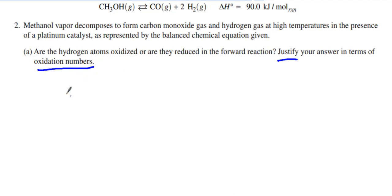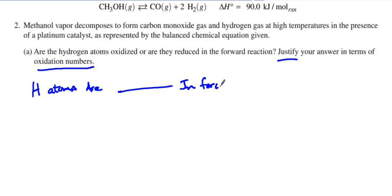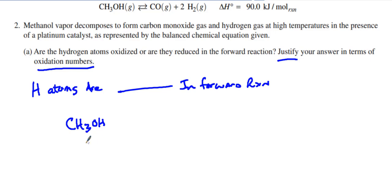We want to know what happens to hydrogen atoms. Are they oxidized or reduced in the forward reaction? I'm going to look at oxidation numbers. We have CH3OH. Hydrogen is plus one, there are three of them so plus three, plus one more hydrogen gives a positive four overall oxidation contribution from the hydrogens. The carbon — we know oxygen is negative two in this molecule, which means carbon is going to be negative two.